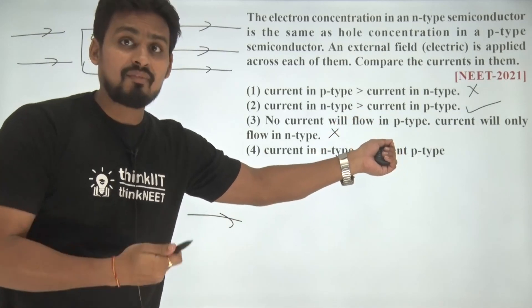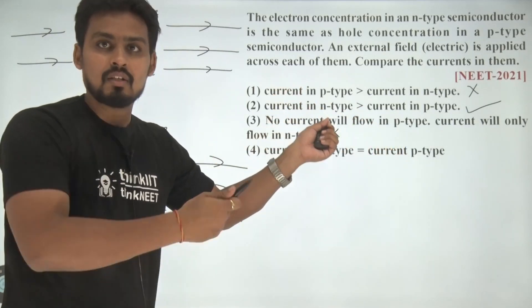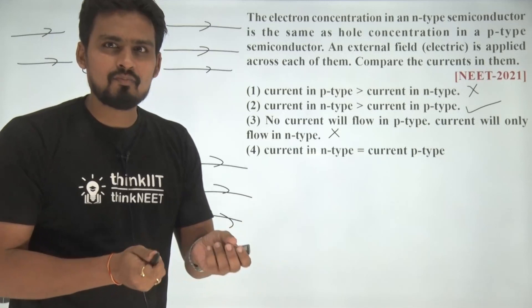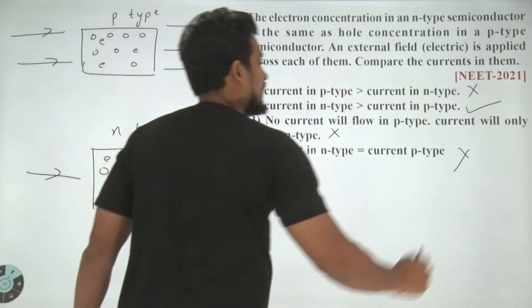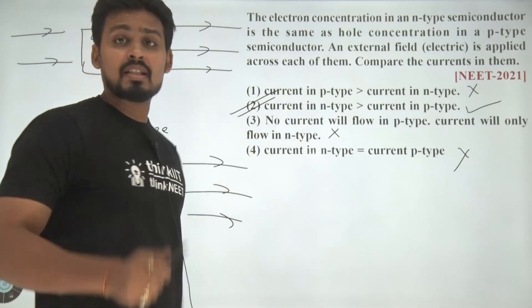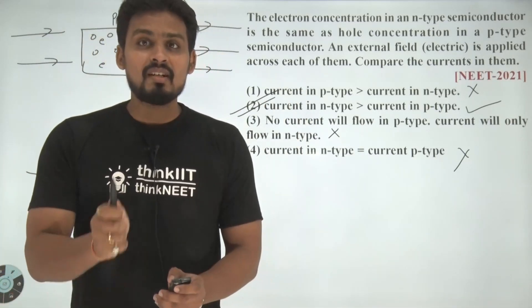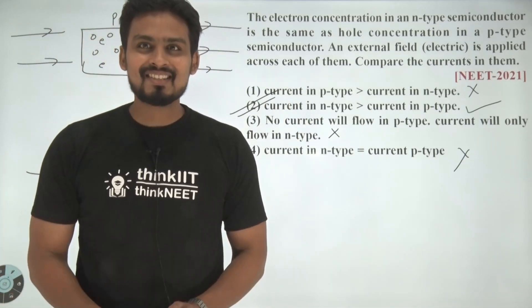Because there are electrons which are free and hence, due to electric field, those will get movement from one place to another. Current in N type and P type are same? False. Hence, the correct answer for this particular case is option number 2. I hope you have understood this. Thank you.